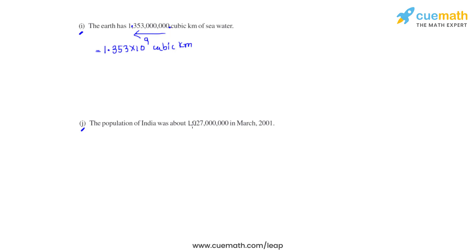Coming to the last part, part J, the answer will be 1.027 × 10⁹. This is the standard form of the population of India in March 2001. This is how we can get any huge or large number into standard form so that it becomes easier for us to compare, read, and understand how large a certain number is.